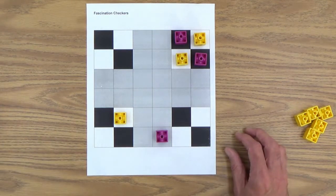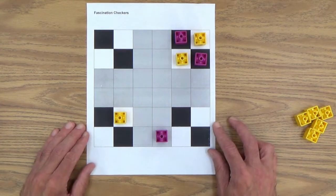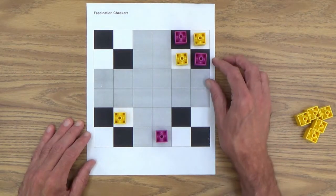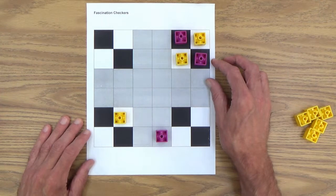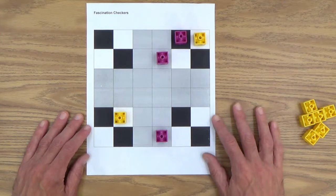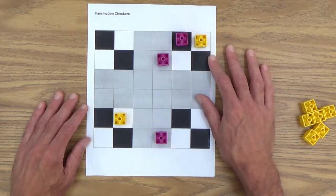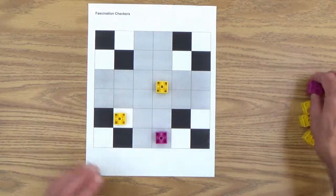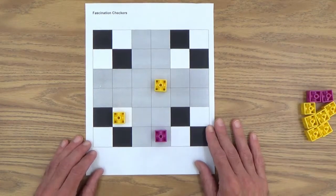Now it's purple's turn. Let's see. Where might purple want to move? Here. Now it's yellow's turn. Uh-oh, look at that. Yellow has a double jump. Boom. Boom. It takes two purple.